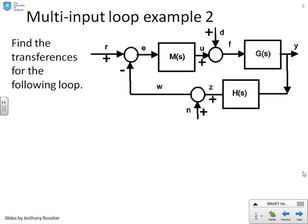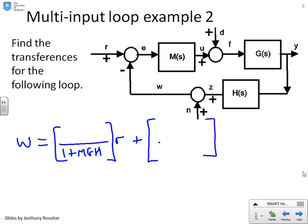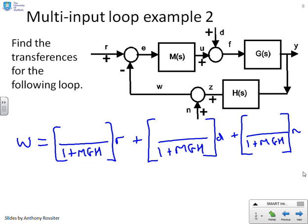Let's try a different example now. What happens if, for example, I wanted to find W? So I'll do this a bit more quickly. So we'll write W equals. And so again, I've got 1 plus MGH in the denominator times R plus something over 1 plus MGH times D plus something over 1 plus MGH times N.